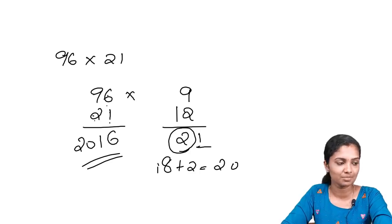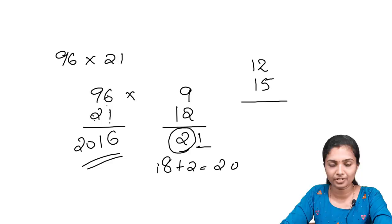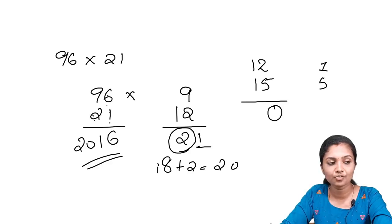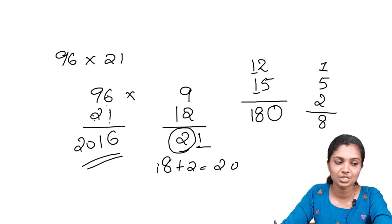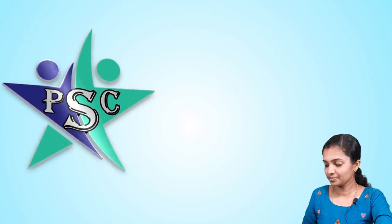Let's try another number: 12 into 15. First, 2 into 5 is 10. Write 0 and carry 1. Now multiply diagonally: 1 into 5 is 5, and 1 into 2 is 2. So 5 plus 2 is 7, plus the carried 1 gives 8. Write 8. Now 1 into 1 is 1. So the answer is 180.